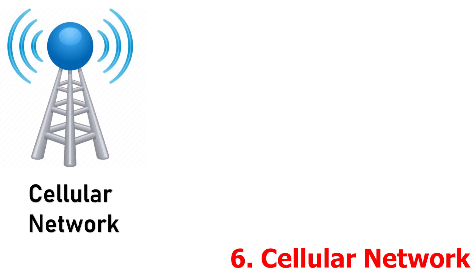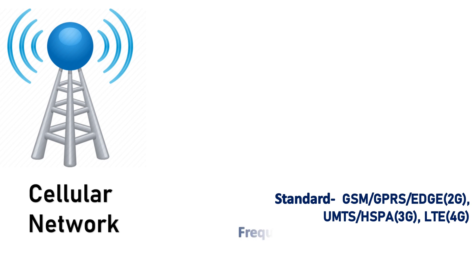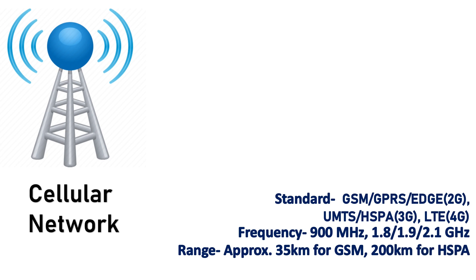Number 6, Cellular Network. It covers GSM, GPRS, Edge, UMTS, HSPA, and LTE standards. It has several frequency ranges: 900 MHz, 1.8, 1.9, and 2.1 GHz. Its range for GSM is maximum 35 km and 200 km for HSPA. Its data rate for downloading is an average of 35 to 170 kbit per second.